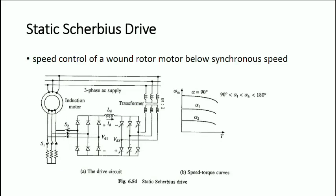The drive is started using resistance control: S1 is closed and S2 is open. When the speed reaches within the control range — for example, when slip falls to around 30% if S_max is 20% — the static Scherbius drive takes over: S1 is opened and S2 is closed. For fan and pump drives, braking is not required because the fluid pressure provides adequate braking torque, and the motor slowly comes to standstill.